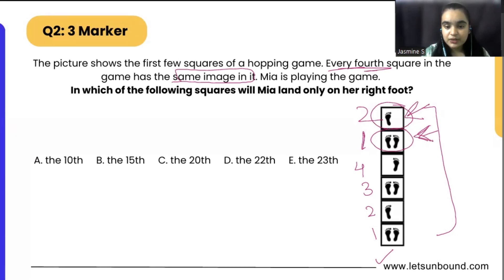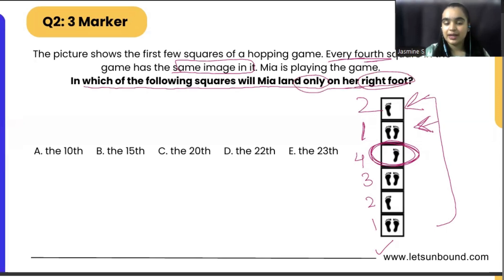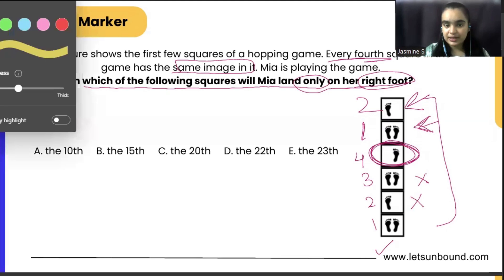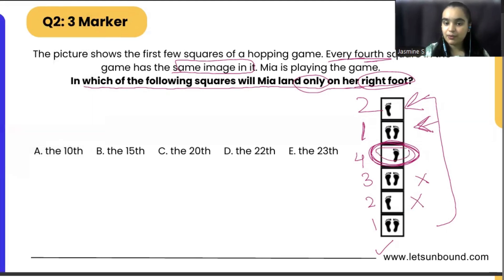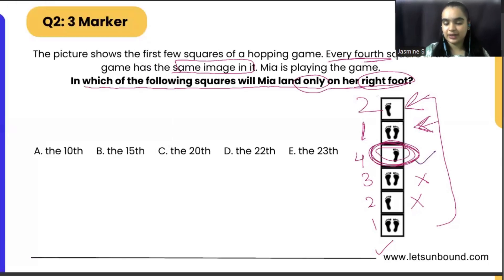The right foot is only in the fourth box. We just have to see in which squares Mia will land only on the right foot — not both feet and not only the left foot. We notice that after number four the pattern is repeating again, and on number four we have the right foot. So it is going to repeat the same pattern, and on the multiples of four we will get the right foot.